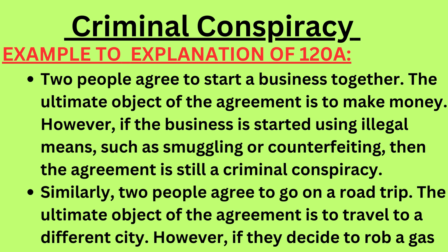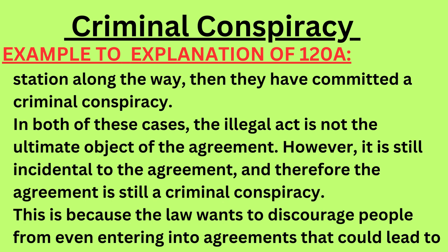For example, two people agree to start a business together — the ultimate object is to make money. However, if the business is started using illegal means such as smuggling or counterfeiting, the agreement is still a criminal conspiracy. Similarly, two people agree to go on a road trip to travel to a different city. If they decide to rob a gas station along the way, they have committed a criminal conspiracy, because the illegal act is incidental to the agreement.